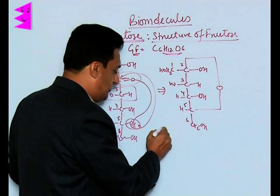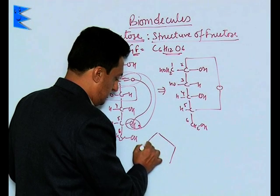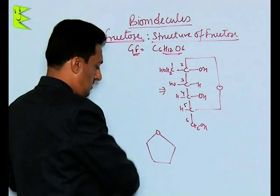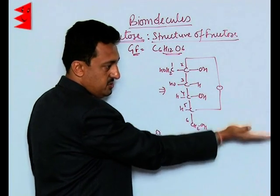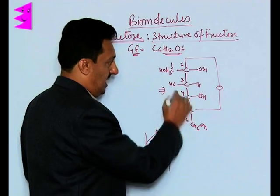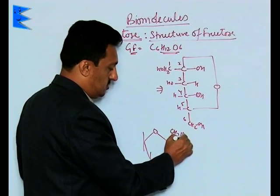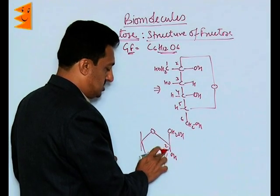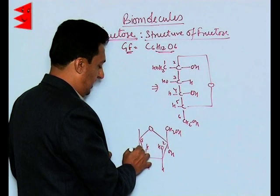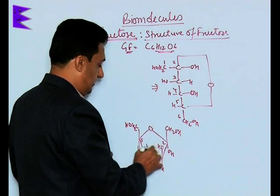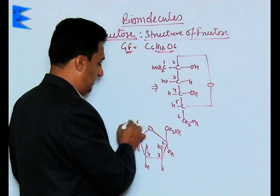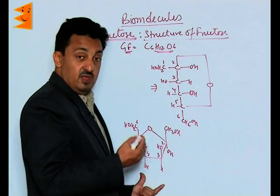This furanose structure can also be drawn in its Haworth projection — converting the vertical structure into a horizontal one. The second carbon has the OH group on the right hand side coming downward, the CH2OH group is present, the third carbon's OH is on the top, the fourth carbon has H, and the fifth carbon has H and the CH2OH group on the sixth carbon.